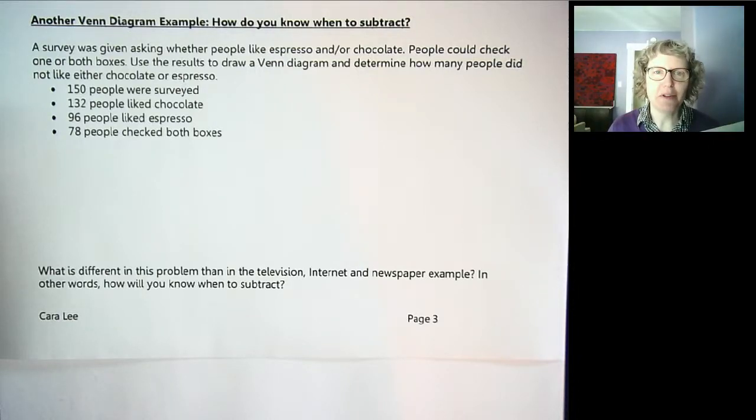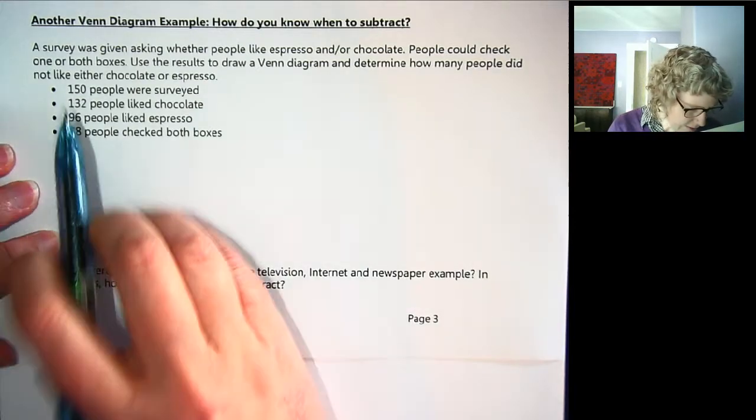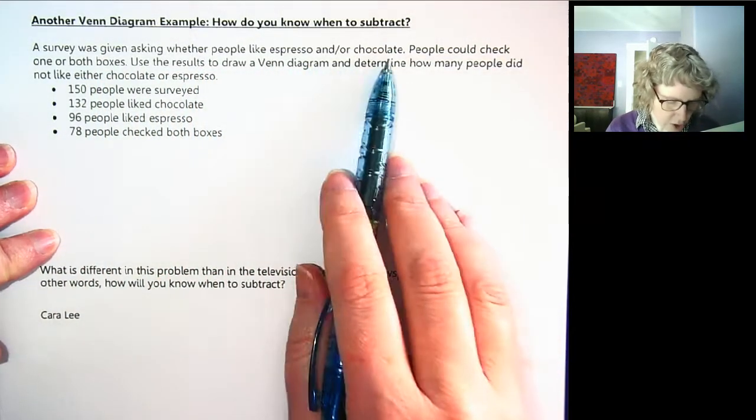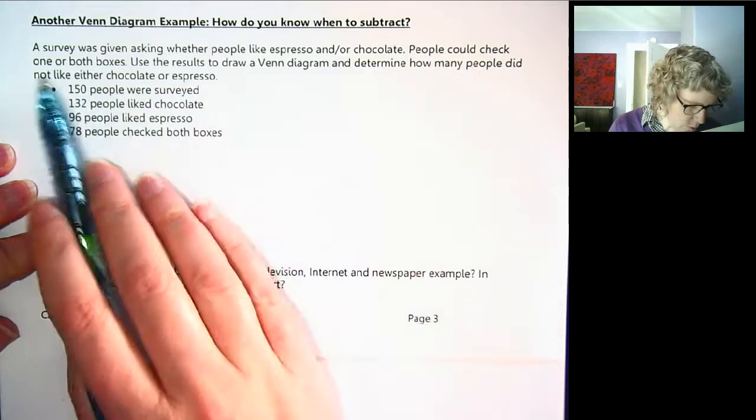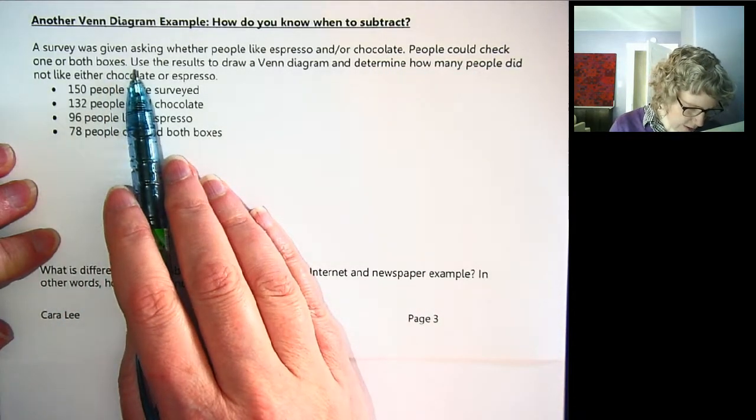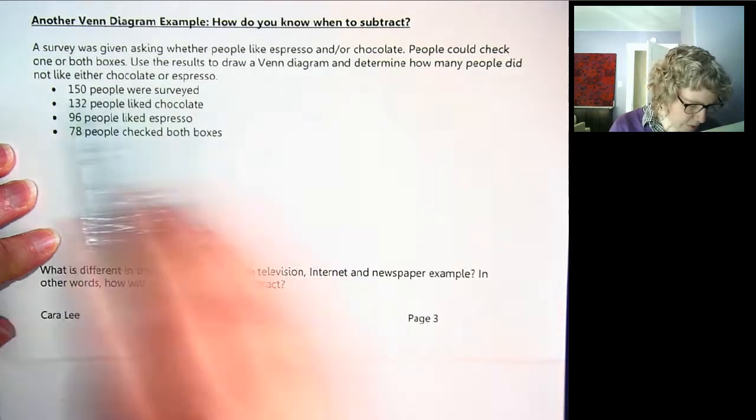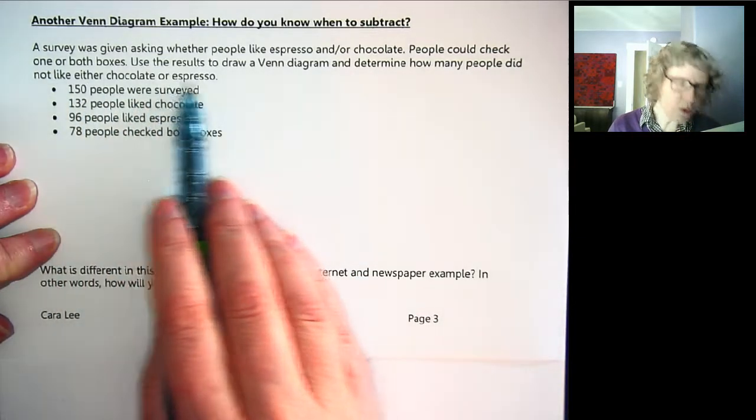Hi, this is another example of how to do a Venn diagram problem. This is a little different type of problem than the last one, so let's jump right in and read it. A survey was given asking whether people like espresso and or chocolate. People could check one or both boxes. Use the results to draw a Venn diagram and determine how many people did not like either chocolate or espresso.